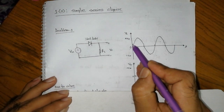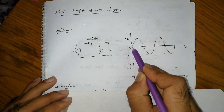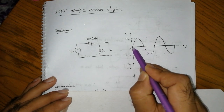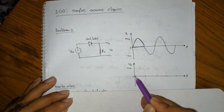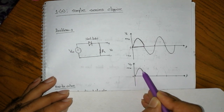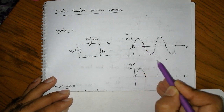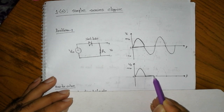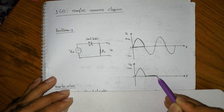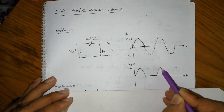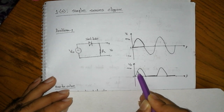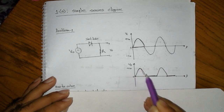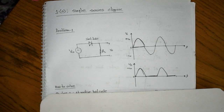The result is that the input equals the output. For the negative half cycle, the output is zero. For the positive half cycle, the output is continuous.